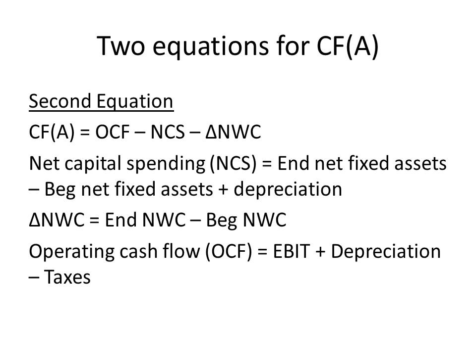We add back depreciation because the ending net fixed assets has been reduced by the amount of depreciation over the year, and depreciation isn't a real cash flow, so we don't want it clouding our work. The change in net working capital is simply ending net working capital minus beginning net working capital. Since net working capital equals current assets minus current liabilities, we're really looking at ending current assets minus ending current liabilities, minus the quantity of beginning current assets minus beginning current liabilities.